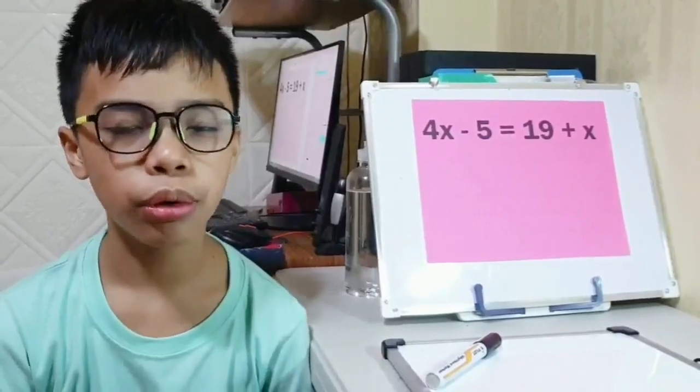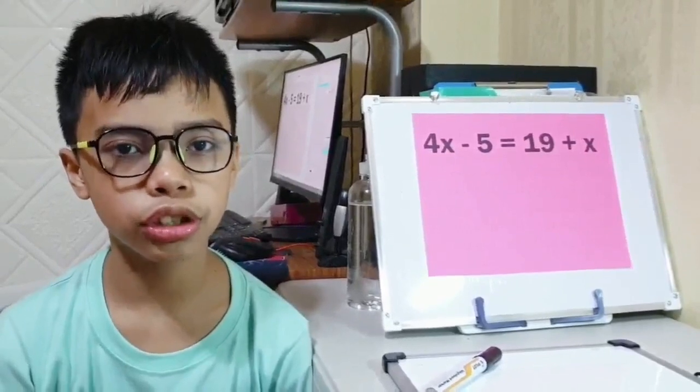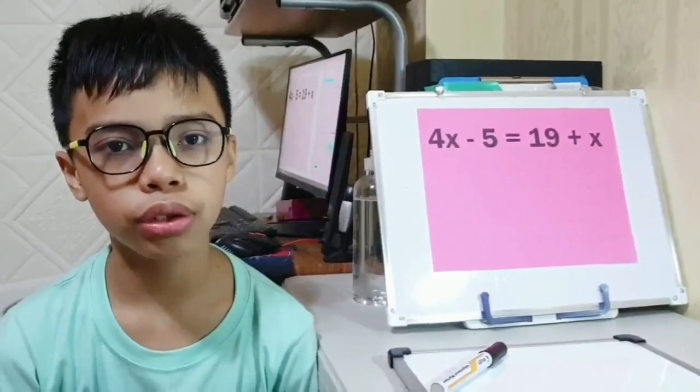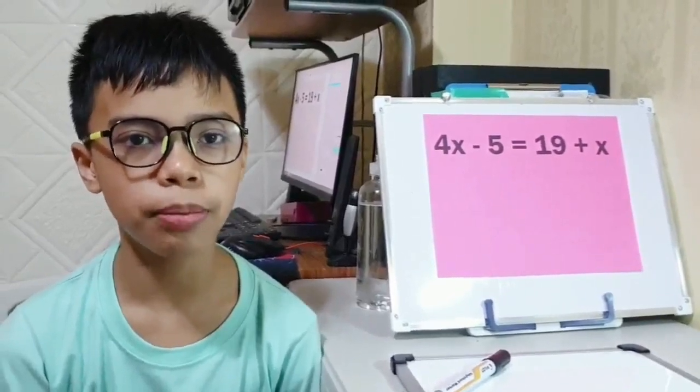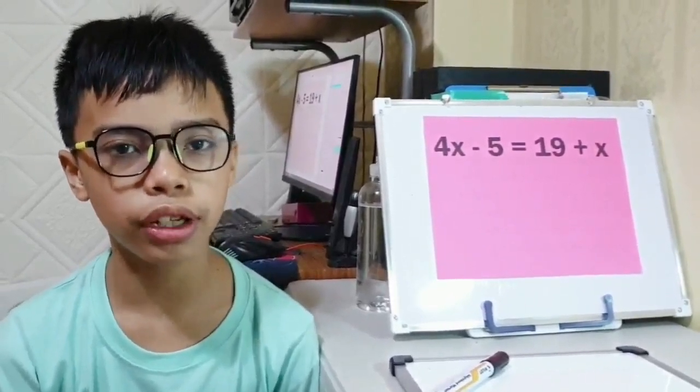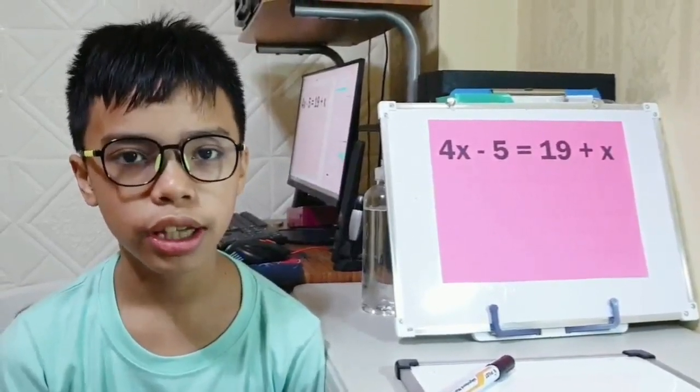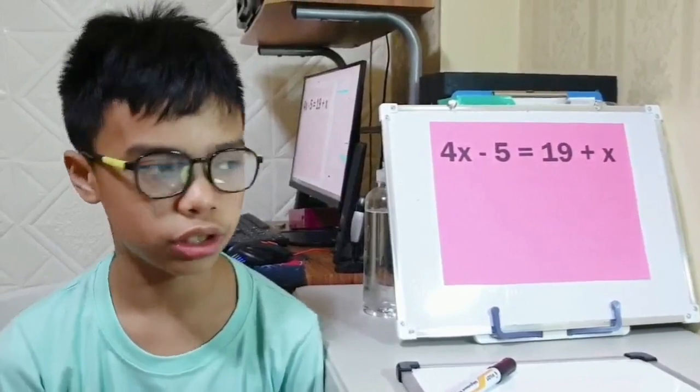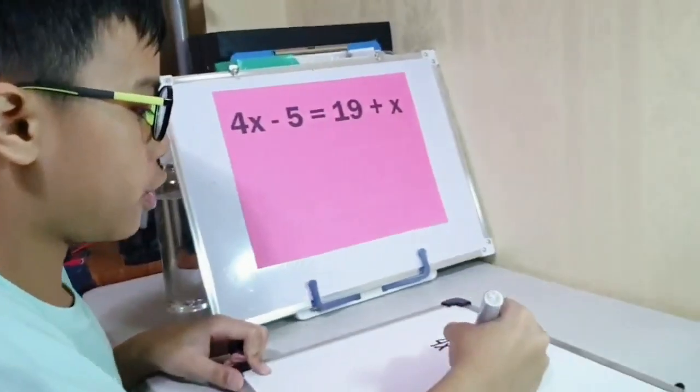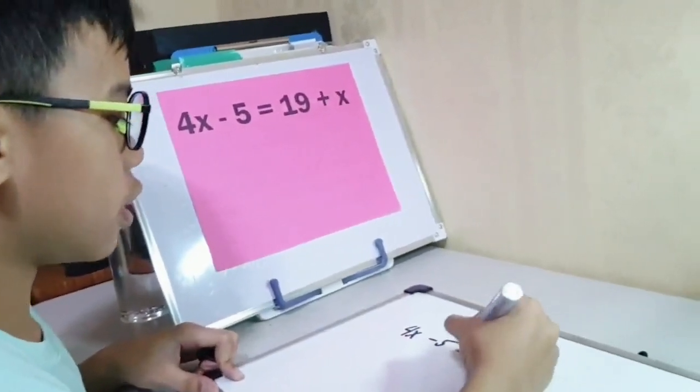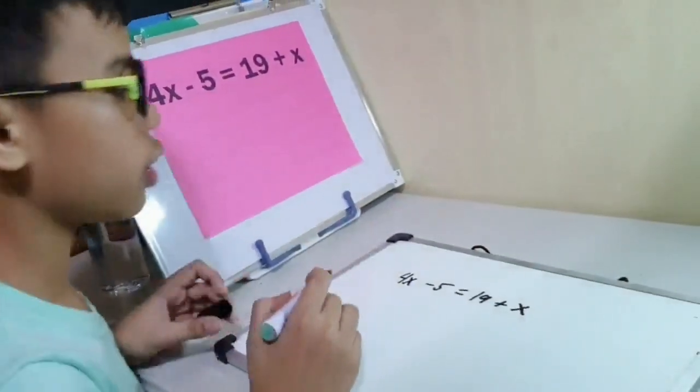Sometimes in algebra, we rearrange terms, and that is called transposition. But why do we do that? We do that to add or subtract the one with the variables and the one that doesn't have. I'm going to give you an example of an algebraic equation that needs transposition. So, 4X minus 5 equals 19 plus X.